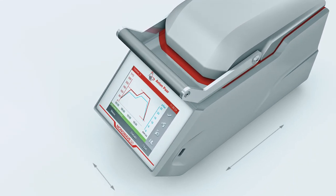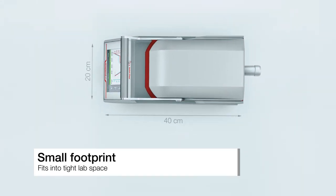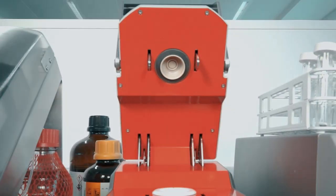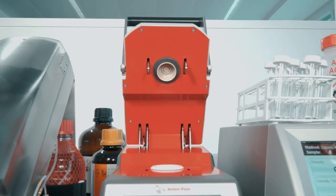With a footprint of only 20 by 40 centimeters, Monowave 50 takes up minimum lab space. With these dimensions, it even fits into the busiest lab and is ready to simplify your work.